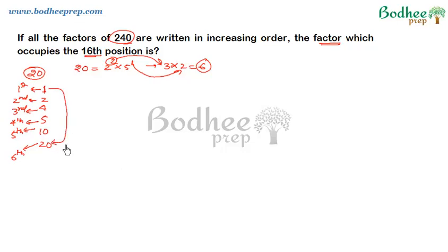Now the interesting thing to note here is that if I take the product of first and the sixth or the last factor, then the product is the number itself. Similarly, if I take the second and the second last, again the product is the number itself, and third and the third last, again the product is the number itself. So this logic will also follow for the number 240.